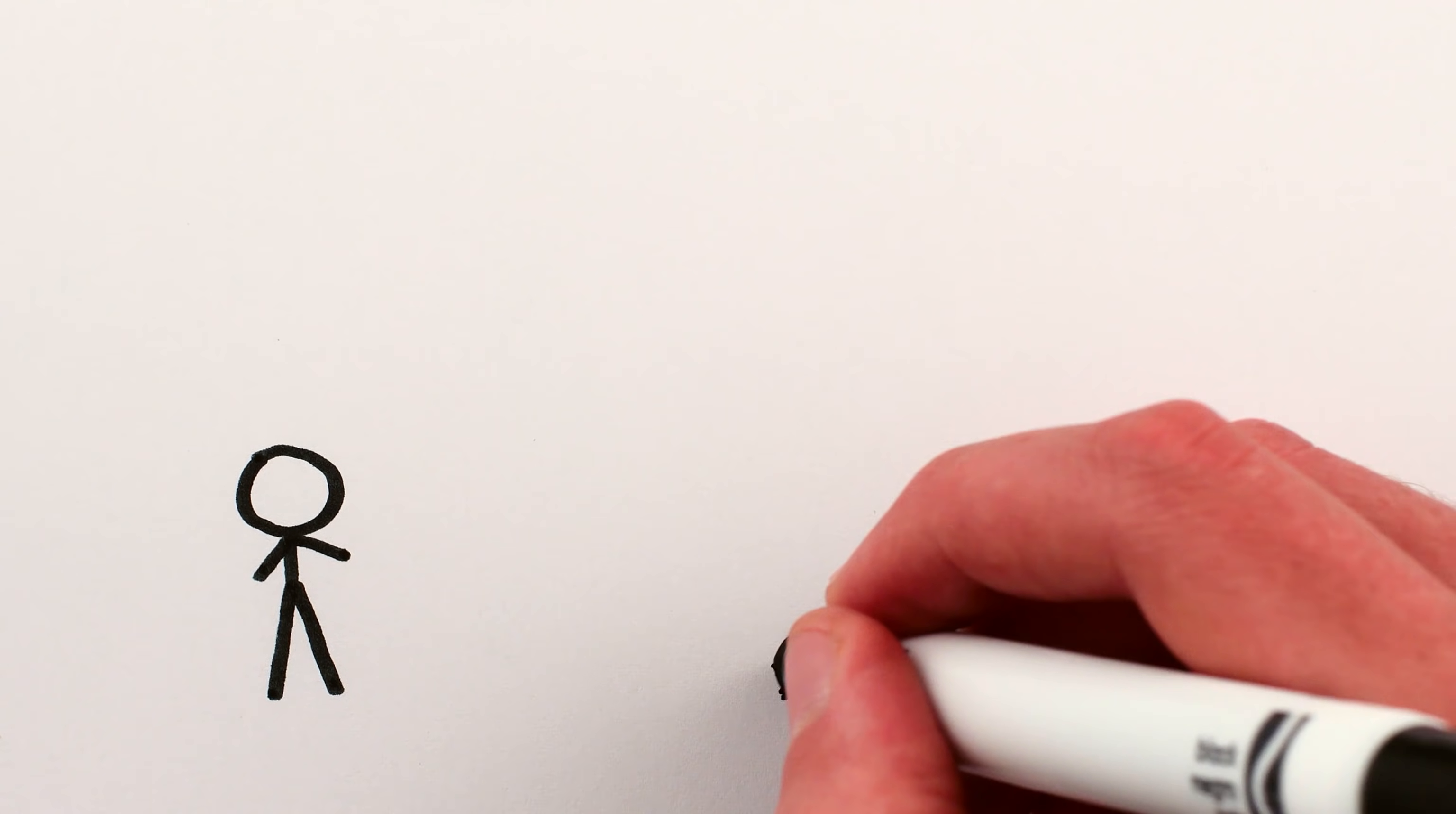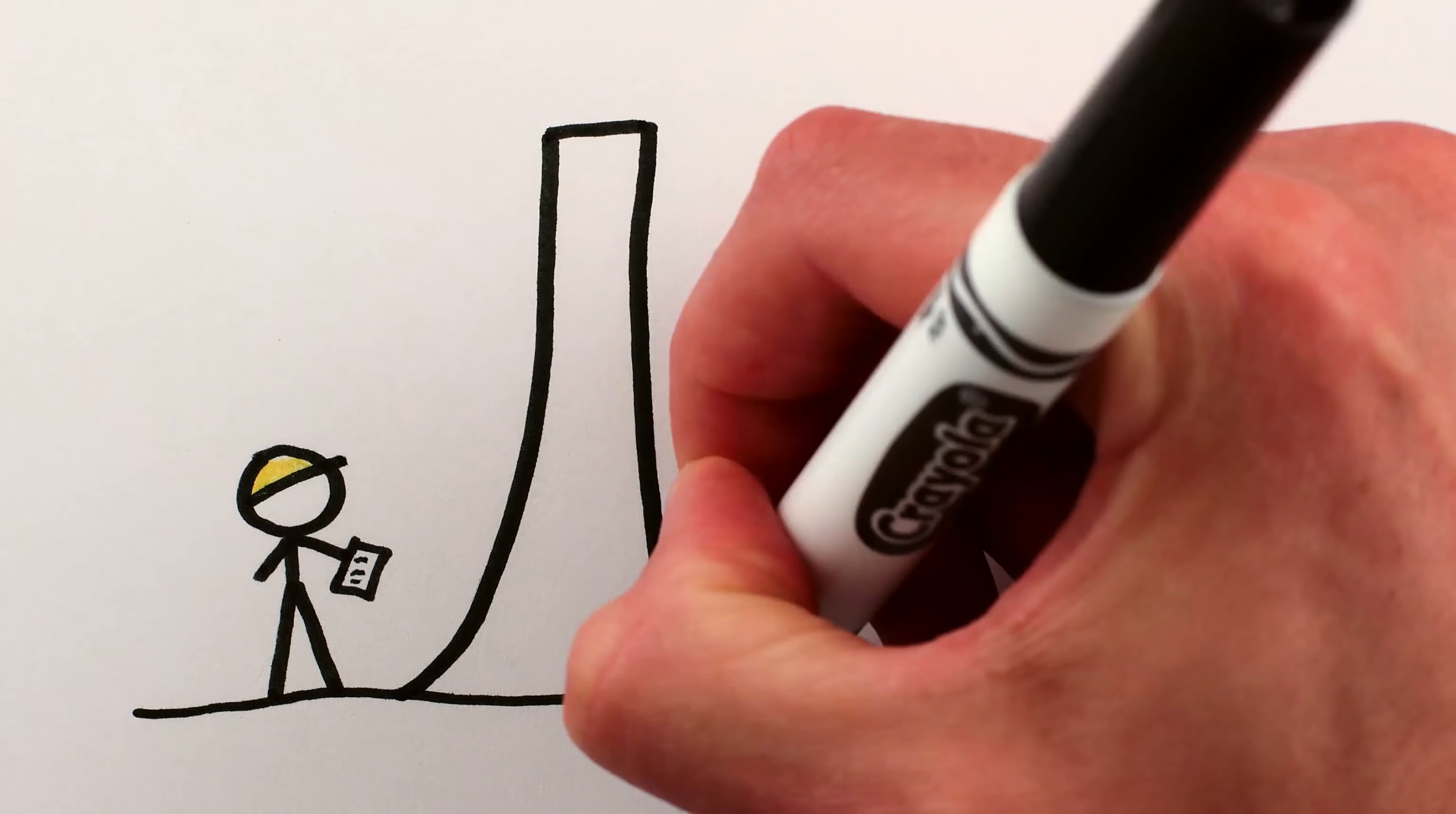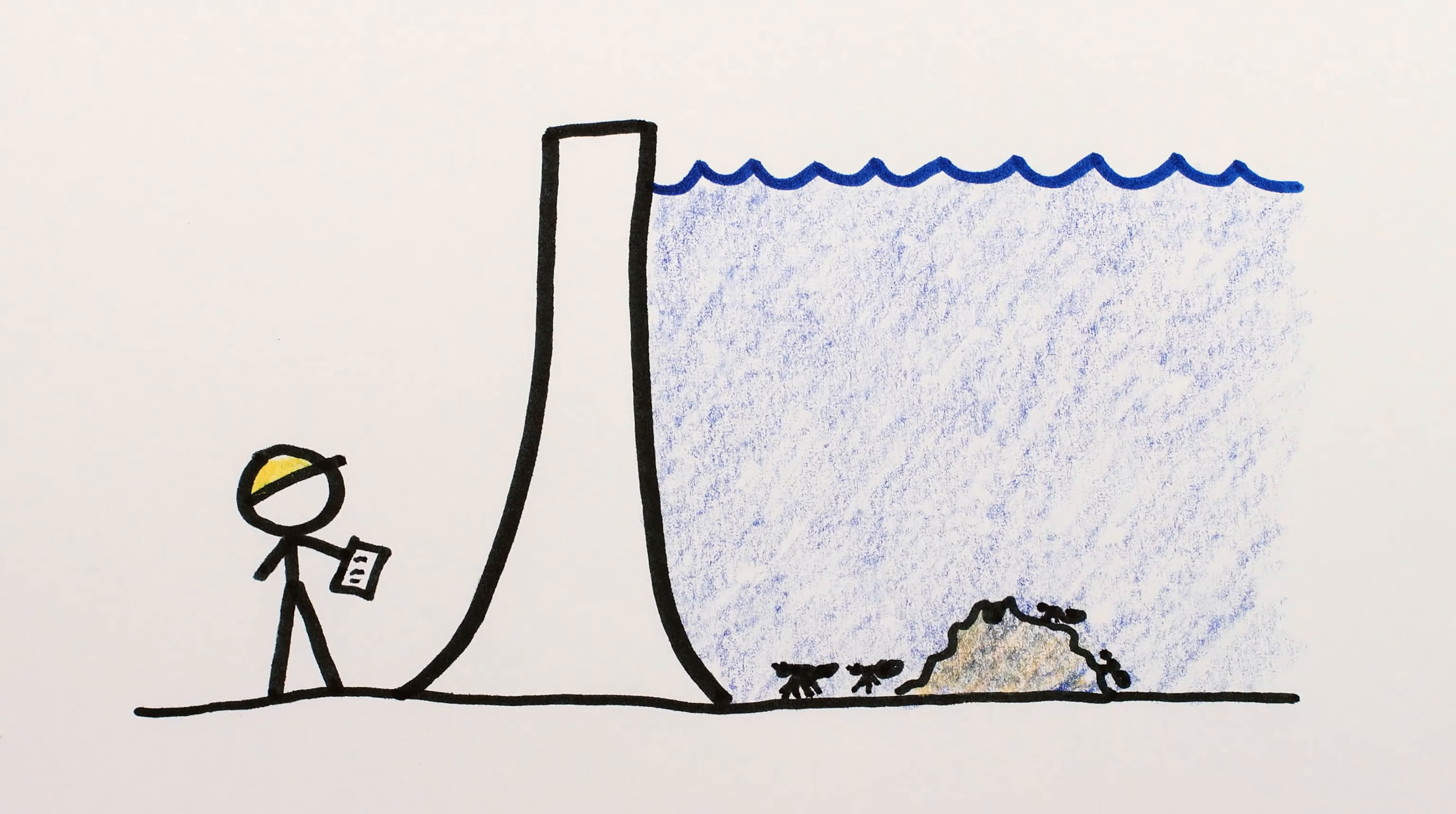As an analogy, humans are more intelligent and competent than ants, and if we want to build a hydroelectric dam where there happens to be an anthill, there may be no malevolence involved, but, well, too bad for the ants.